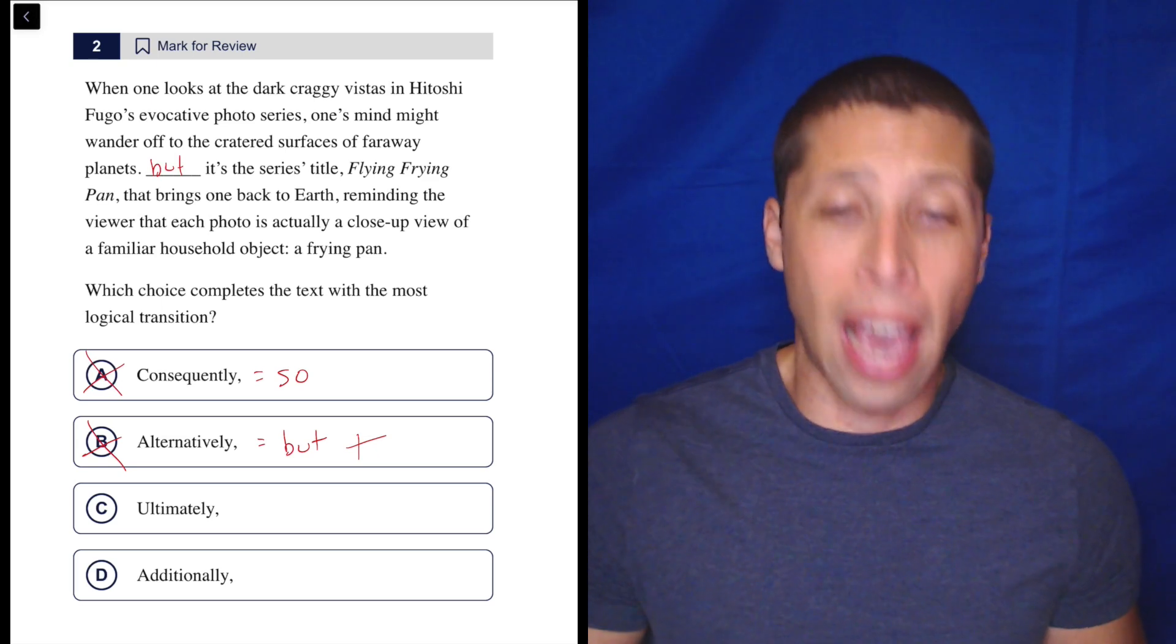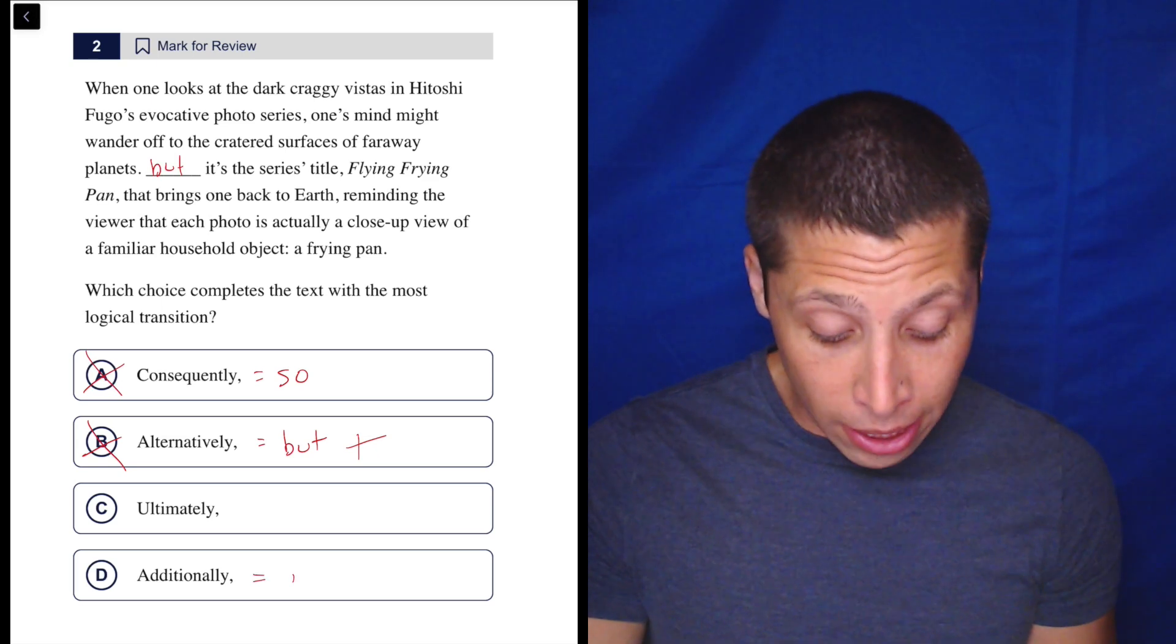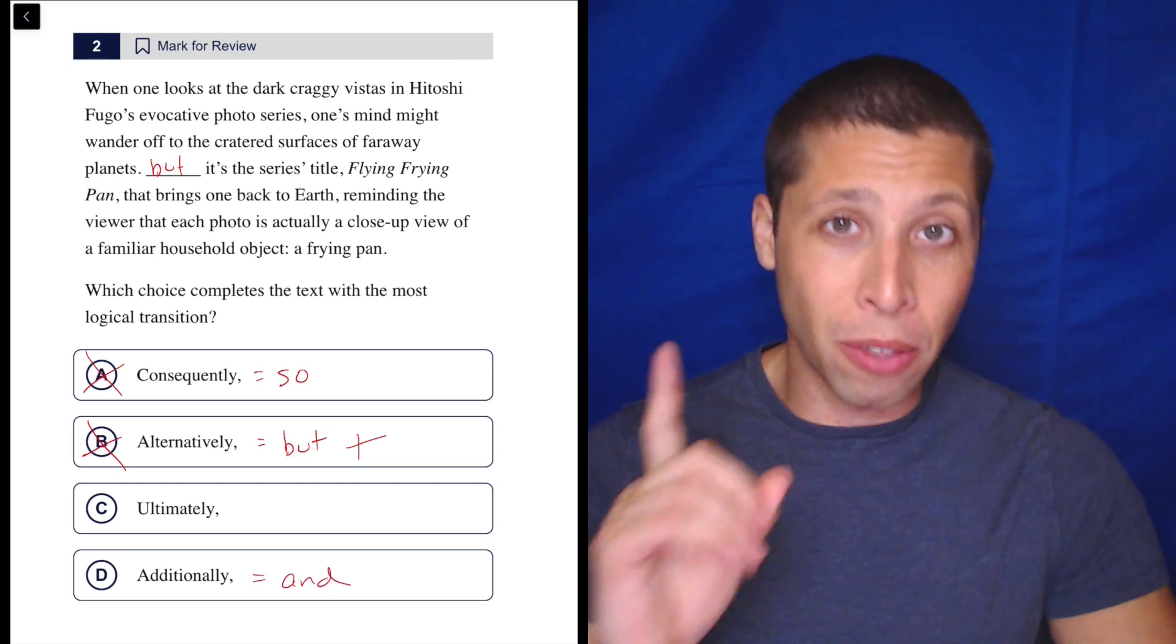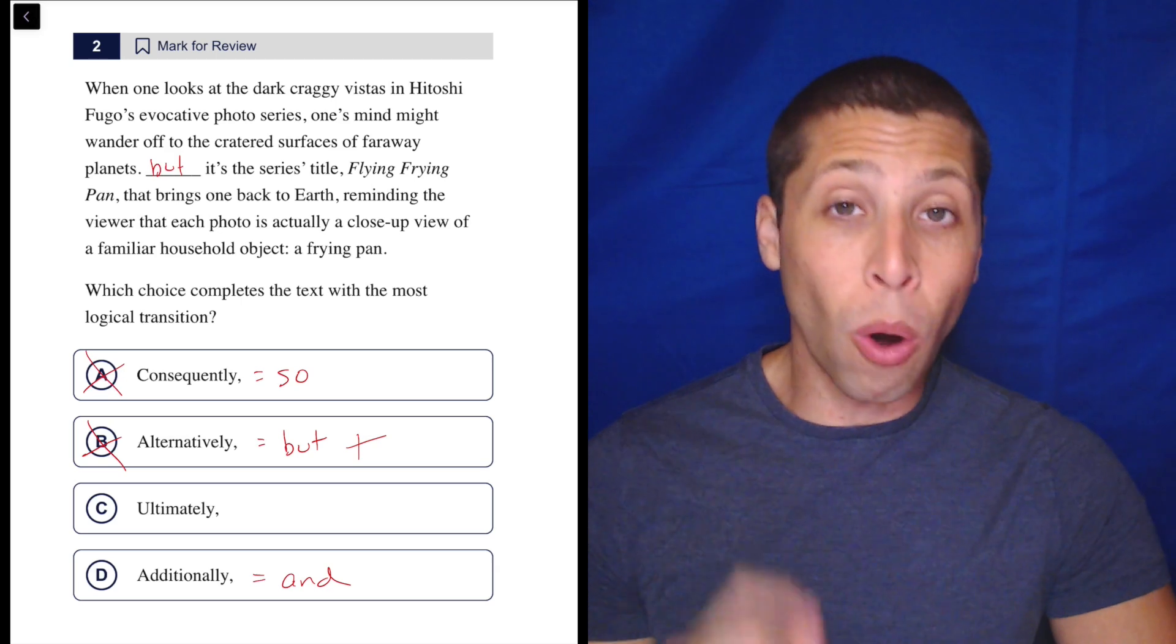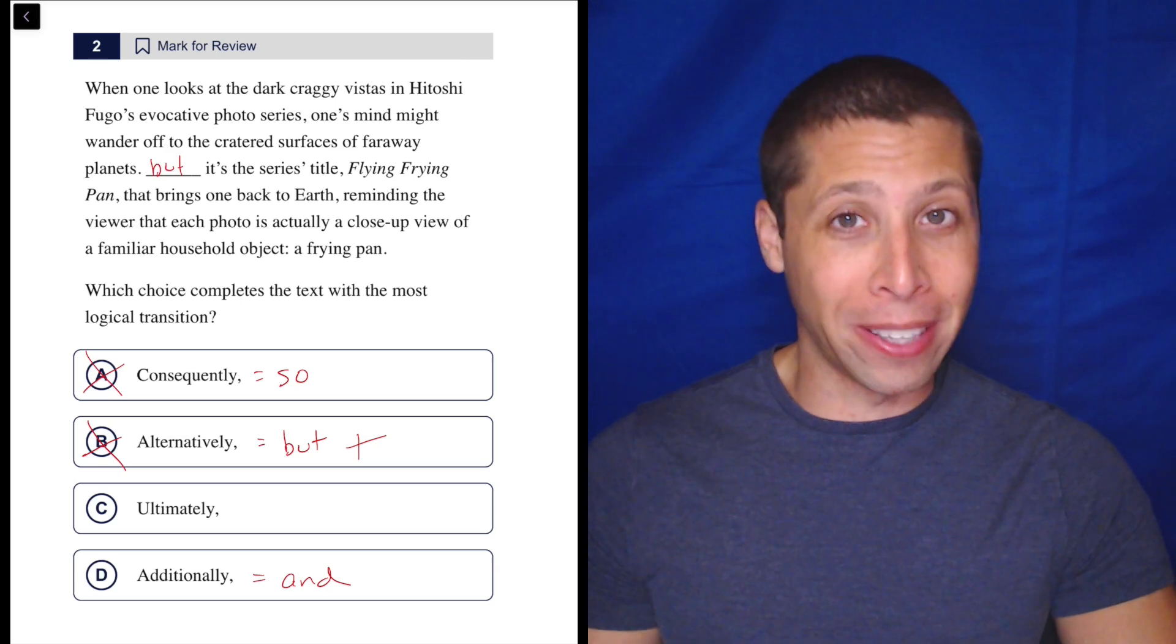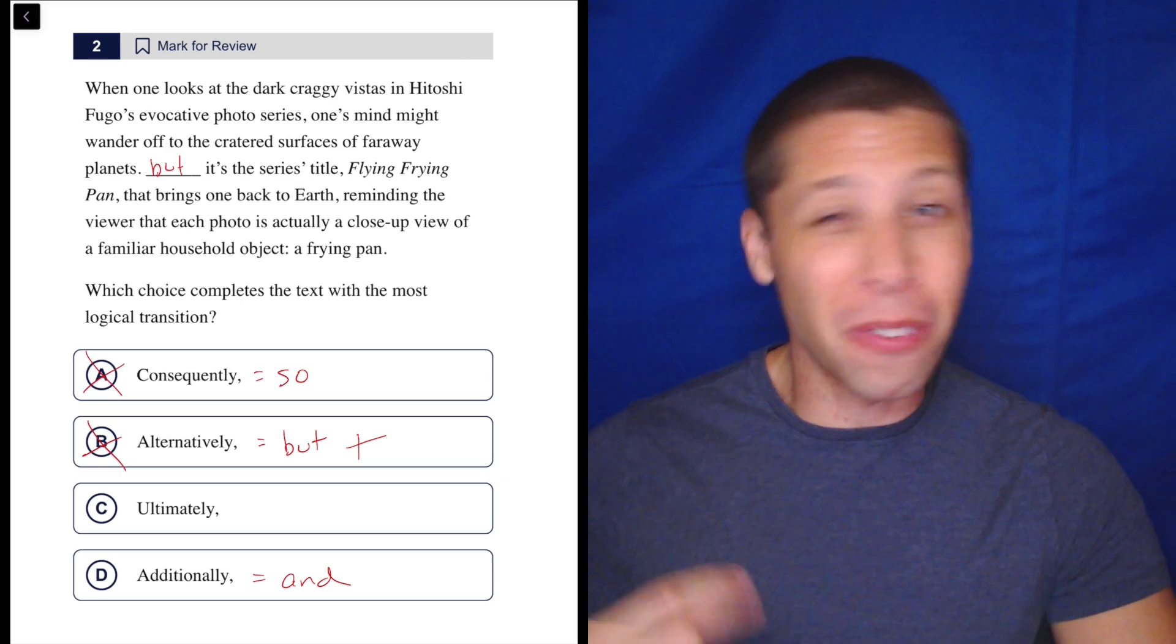And this is a case where I do think categorizing the word helps me understand whether that's a good fit. Now, additionally is just and. And that might fit. And that's the thing. And is barely a transition at all. But the rule with the and words is we can only pick them if everything else fails.